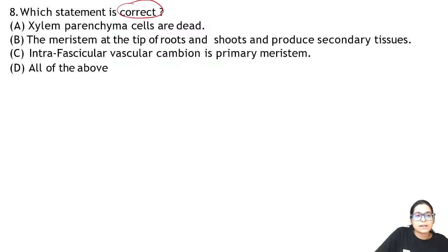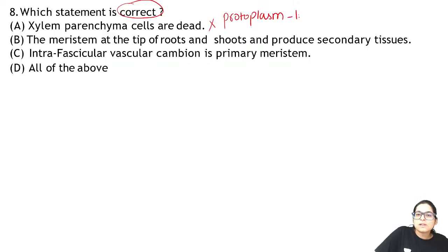Which statement is correct? Is xylem parenchyma dead? No — xylem parenchyma has protoplasm, so it is living. So this answer is not A. The meristem at the tip of the root and shoot — they produce secondary tissue? That is wrong — GALAT.